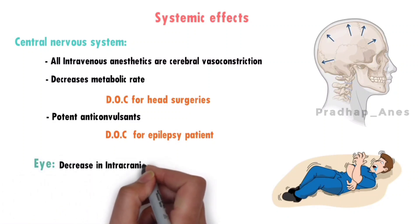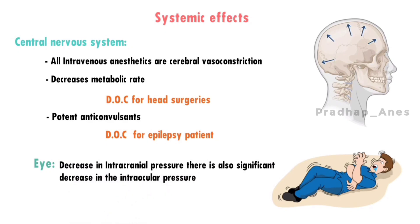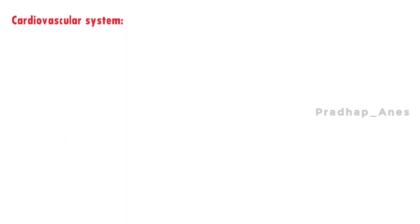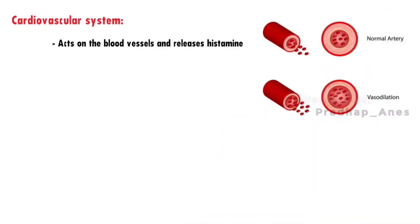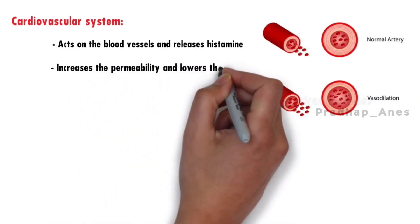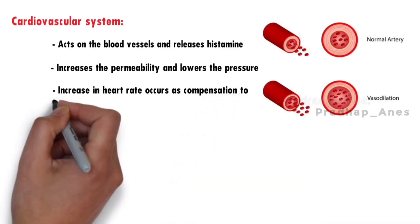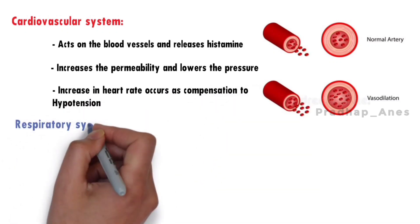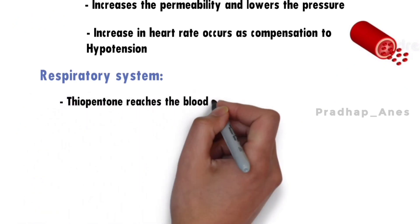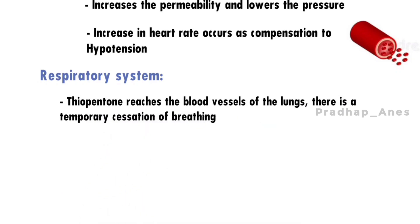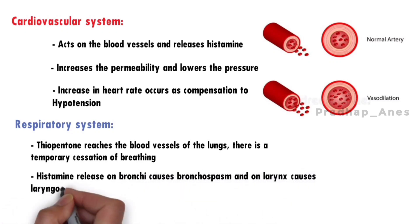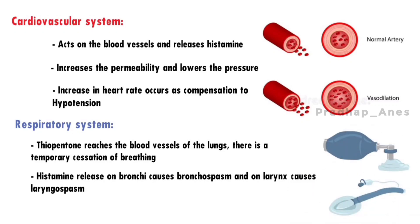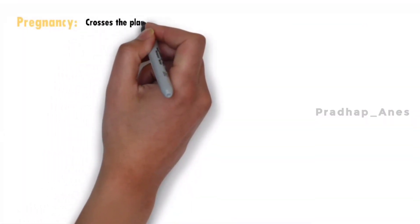When there is a decrease in intracranial pressure, there is also a significant decrease in intraocular pressure. Cardiovascular System: Thiopentone acts on blood vessels and releases histamine. Histamine causes dilation of blood vessels, increases permeability, and lowers blood pressure. An increase in heart rate occurs as compensation for hypotension. Respiratory System: When thiopentone reaches the blood vessels of the lungs, there is a temporary cessation of breathing. At high doses it causes transient apnea, due to histamine release. Histamine release on the bronchi causes bronchospasm, and on the larynx causes laryngospasm. Treatment is intermittent positive pressure ventilation with bag and mask. Regarding pregnancy, it crosses the placenta and causes fetal depression.